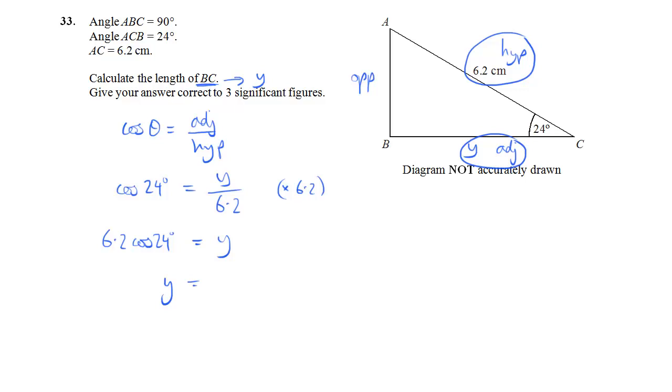And now we just stick it in the calculator. So Y is 6.2 times cos 24, which comes to 5.6639 and so on.